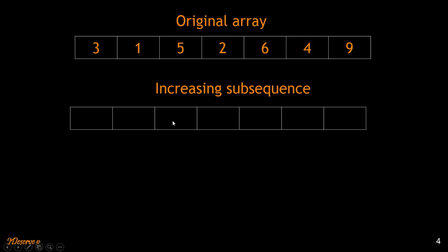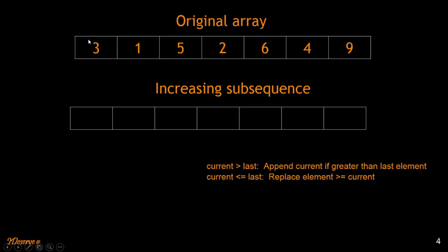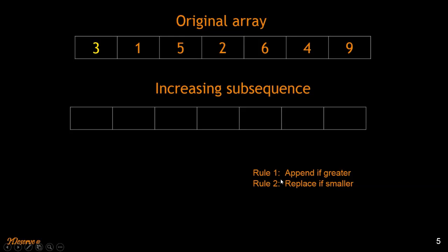While filling up this increasing subsequence, I follow two rules. The first case is where the current element is greater than all elements in the increasing subsequence array — basically greater than the last element. In that case, I just append the element to the existing subsequence. The second case is where the current element is less than or equal to the last element — in that case, I find a place for it inside the existing subsequence and replace the element at that position. Rule one: append if greater. Rule two: replace if smaller.